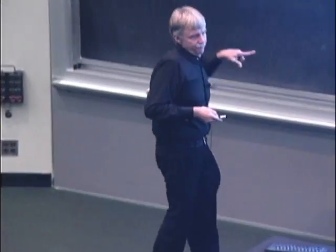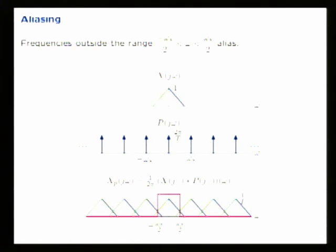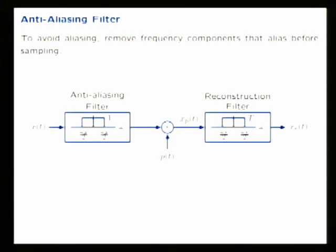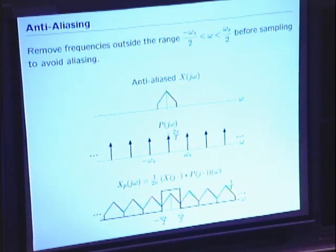In a physical system, signals whose frequency content falls out of the band-limited range will alias. For example, if you try to represent a signal using a sampling period T such that the impulses in frequency are separated by 2π/T — less than twice the signal's bandwidth — it would alias, which is bad. So we typically include an anti-aliasing filter to pre-filter the signal, get rid of parts that will be a problem when sampling, then do regular uniform sampling and band-limited reconstruction.